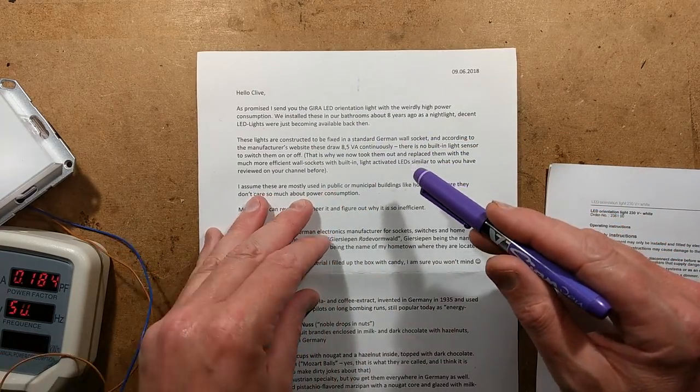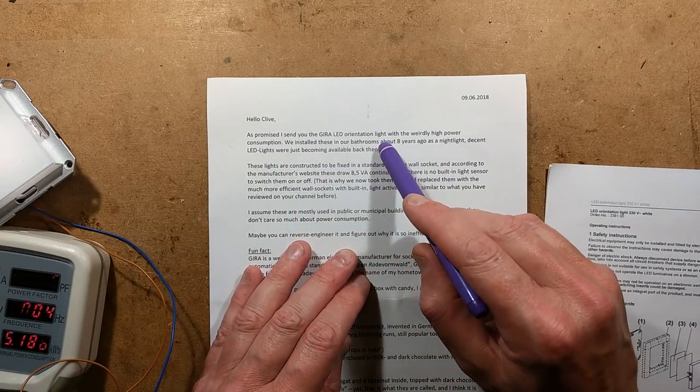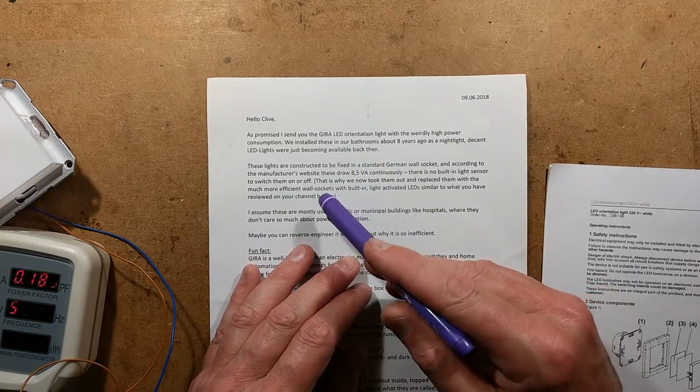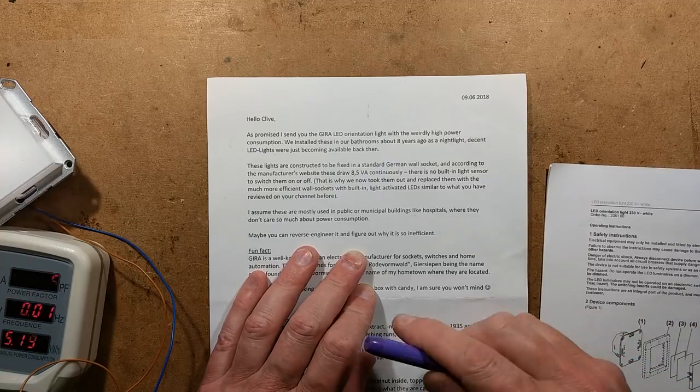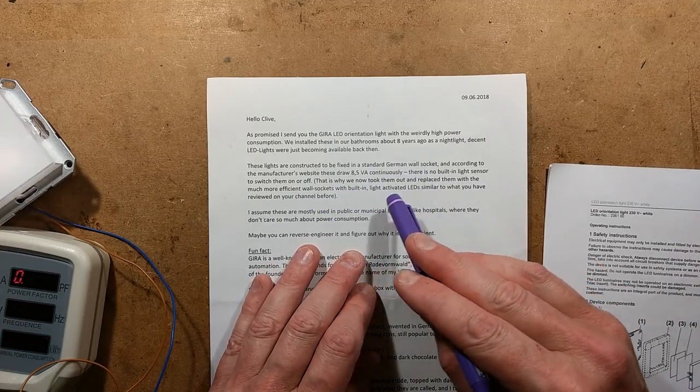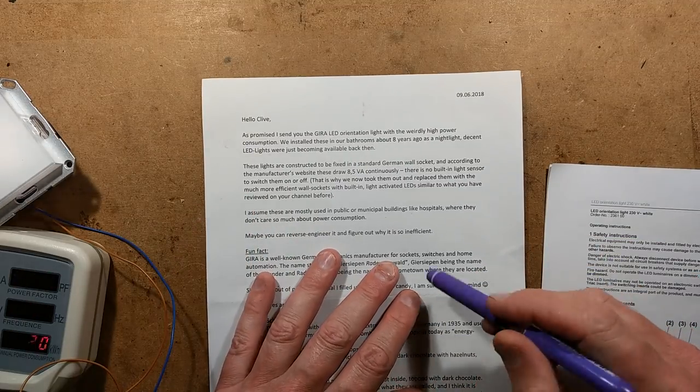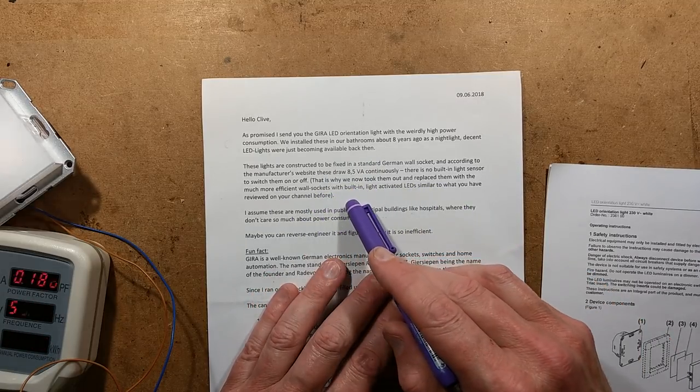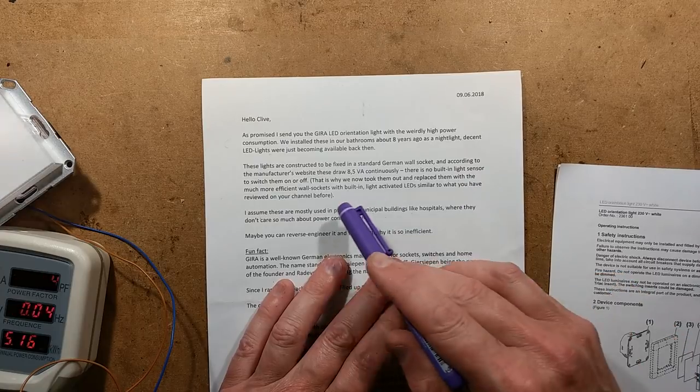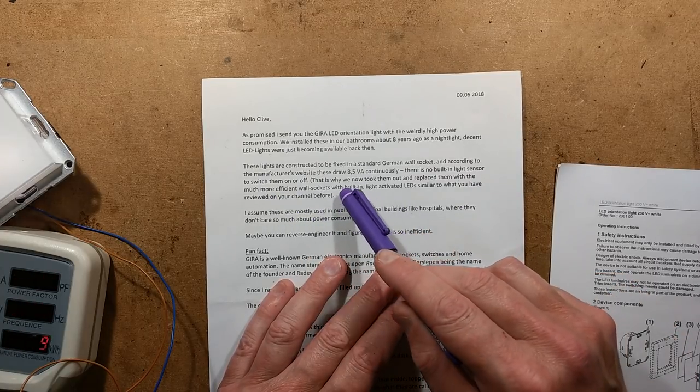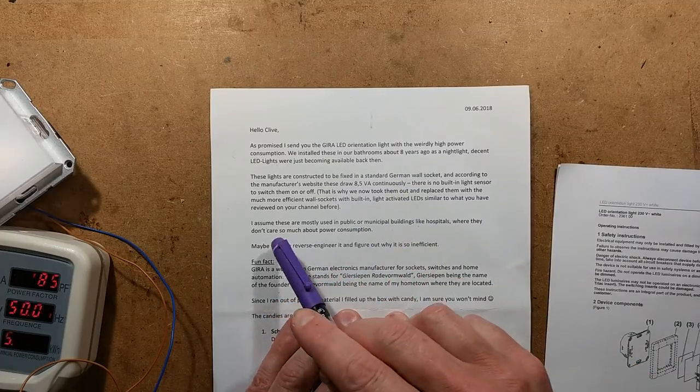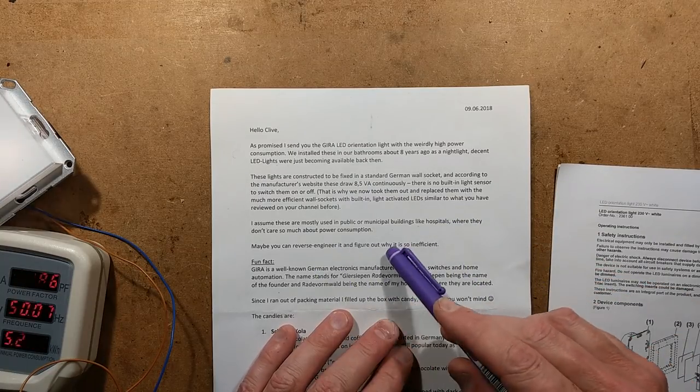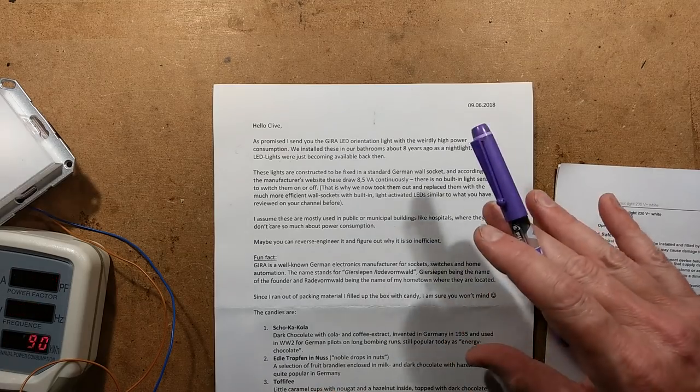Here's a letter from Kevin in Germany. As promised, I send you the Gura LED orientation light with the weirdly high power consumption. We installed these in our bathrooms about eight years ago as a nightlight. Decent LED lights were just becoming available back then. These lights are constructed to be fixed in a standard German wall socket, and according to the manufacturer's website, these draw 8.5 volt amps continuously. There is no built-in light sensor to switch them on or off. That is why we now took them out and replaced them with much more efficient wall sockets with built-in light-activated LEDs. Maybe you can reverse-engineer it and figure out why it is so inefficient.